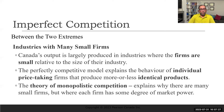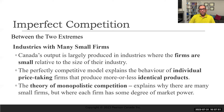Our topic is imperfect competition and strategic behavior. We first focus on monopolistic competition, then we'll talk about oligopoly. Between the two extremes, industries with many small firms — Canada's output is largely produced in industries where firms are small relative to the size of the industry. There's also another situation where a few large firms operate in an industry.